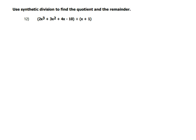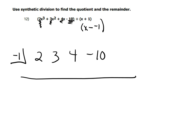And this one says use synthetic division to find the quotient and the remainder. Since it's x plus 1, you have to see this as an x minus a negative 1. So it's really a negative 1 we're dividing by. And then you just grab the coefficients. The 2, the 3, the 4, and the constant of negative 10. Nothing was missing, so I didn't have to insert any zeros.